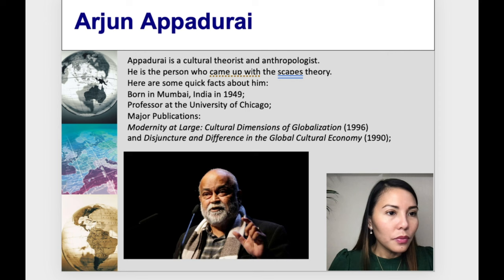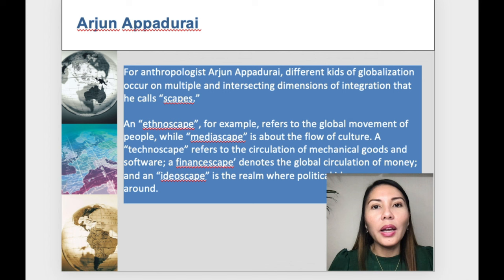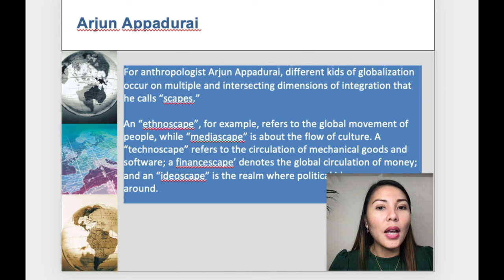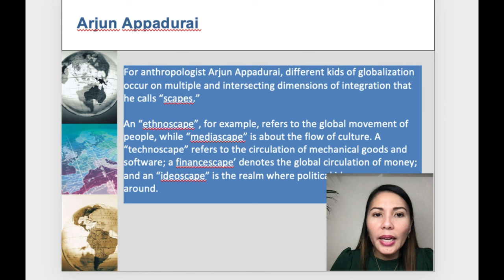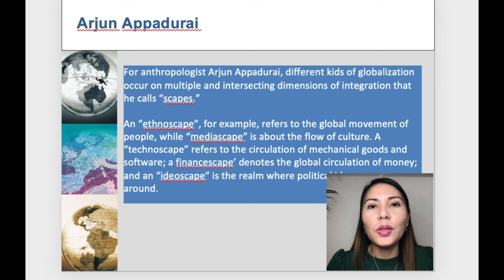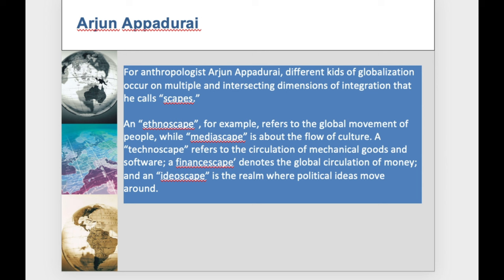According to Appadurai, different kinds of globalization occur on multiple and intersecting dimensions of integration that he calls scapes. There is ethnoscape, which refers to the global movement of people; mediascape, which is about the flow of culture; technoscape, which refers to the circulation of mechanical goods and software; finanscape, which denotes the global circulation of money; and idioscape, which is the realm where political ideas move around.